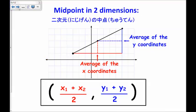What is more important is the midpoint in two dimensions. And in two dimensions, we find the average of the x coordinates and the average of the y coordinates. This should look like an average.